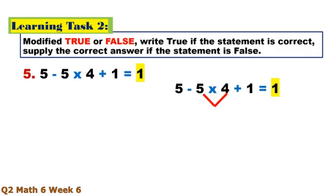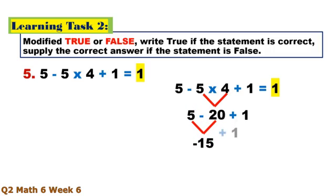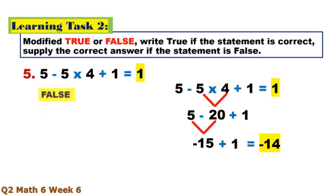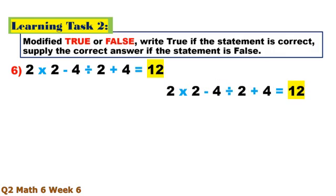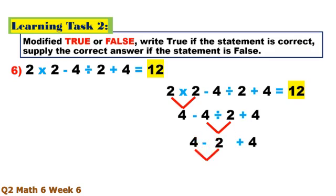Number 5 (continued) and Number 6. Multiplication: 2 times 2 equals 4. Then 4 divided by 2 equals 2. Then 4 minus 2 equals 2, plus 4 equals 6. This is false.